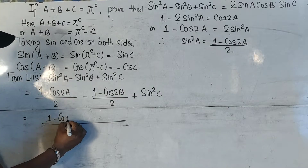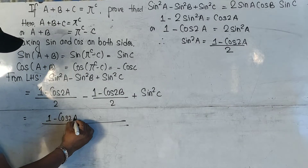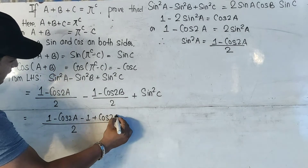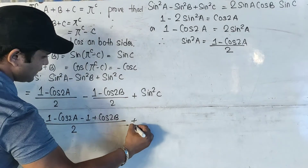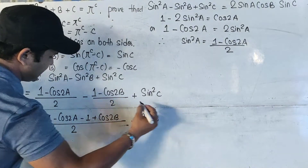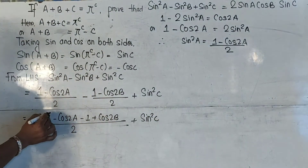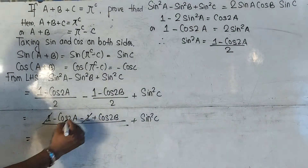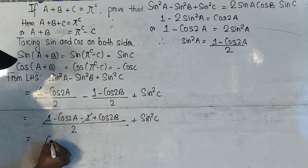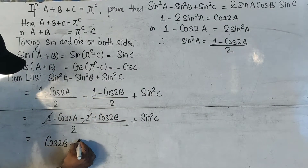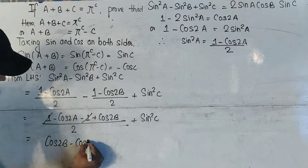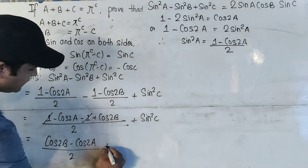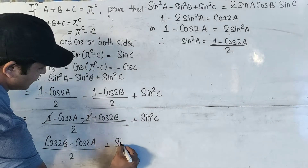After taking the LCM we have (1 - cos2A - 1 + cos2B)/2 + sin²C. The +1 and -1 cancel, leaving us with (cos2B - cos2A)/2 + sin²C.